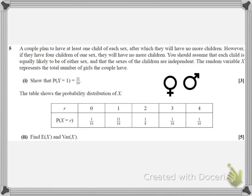So that means we're effectively being told that the probability of having a boy or a girl is a half and that we can use the and rule for multiplying because the probabilities are independent. The probability of having a boy and then a girl will be the probability of having a boy multiplied by the probability of having a girl and so on. And the random variable X represents the total number of girls the couple have.